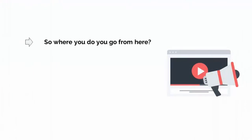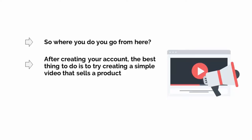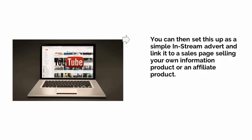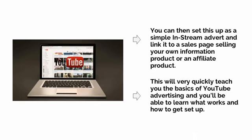So where do you go from here? After creating your account, the best thing to do is to try creating a simple video that sells a product — by using people on Fiverr to create a whiteboard animation, or by making something in PowerPoint. You can then set this up as a simple in-stream advert and link it to a sales page selling your own information products or an affiliate product.